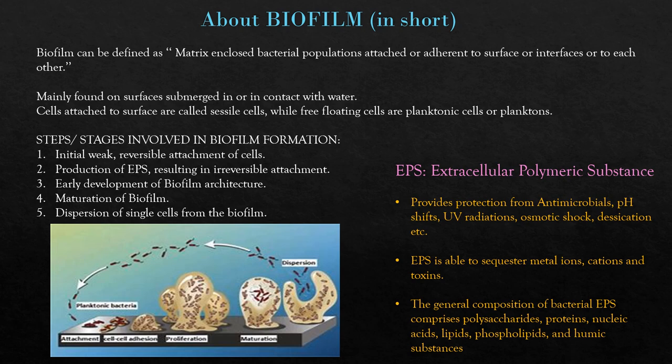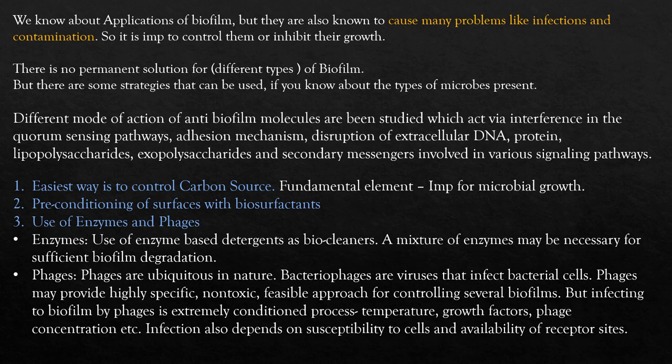EPS, extracellular polymeric substance — also known simply as the matrix — provides protection from antimicrobials, pH shifts, UV radiation, osmotic shocks, desiccation, etc. That is why it is quite difficult, though not impossible, to treat biofilms. The matrix provides good protection for bacteria living under it. EPS is also able to sequester metal ions such as cations and even toxins. The general composition of bacterial EPS comprises polysaccharides, proteins, nucleic acids from dead bacteria, lipids, phospholipids, and humic substances.